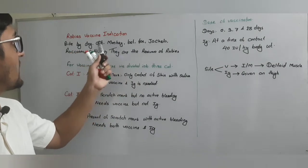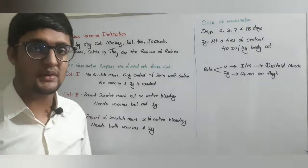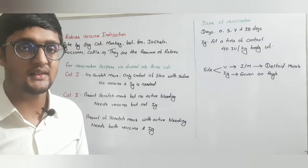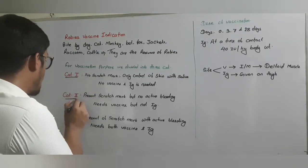So, after the bite of this animal, generally we will give rabies vaccine. Now, for descriptive purpose, we divide into three categories: category one, category two, and category three.